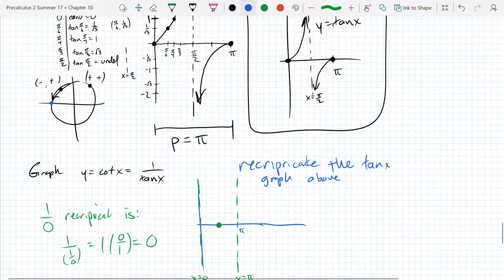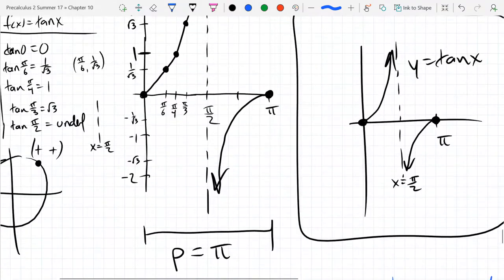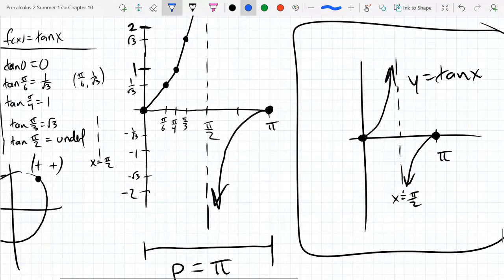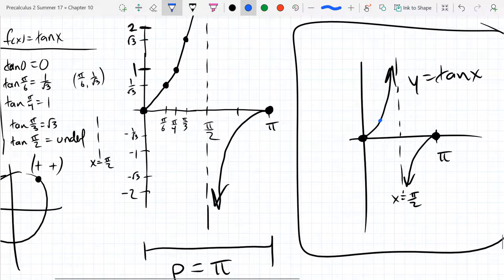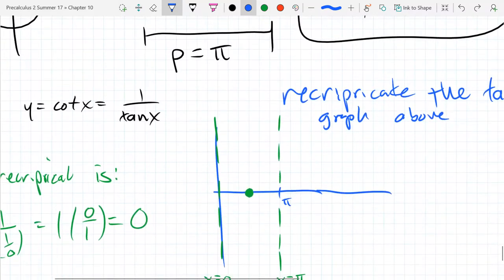I want to grab the y values that are 1 and negative 1 because they'll reciprocate to themselves. So it'll be something like that and that and this graph looks like this.